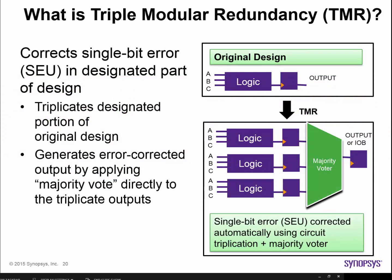What exactly is TMR? TMR stands for Triple Modular Redundancy. You can use TMR to correct SEU single-bit errors in any part of the design that you designate — logic, memories, blocks, IP, etc. All types of TMR triplicate the designated portion of the original design and then determine the final error-corrected output by applying a majority vote directly to the outputs of all of the triplicates. The idea is that if an SEU occurs in any one of the triplicates, the output from the TMR circuit will be correct, thus mitigating the SEU.